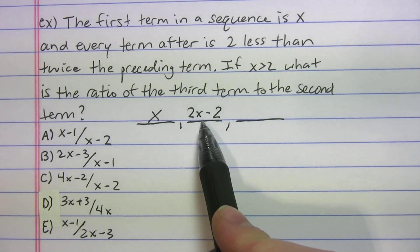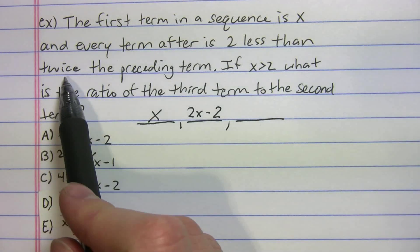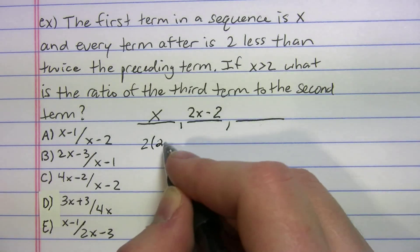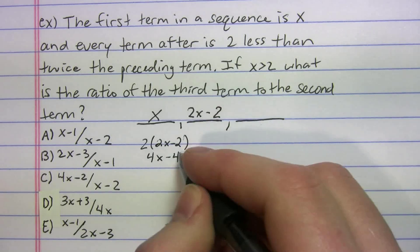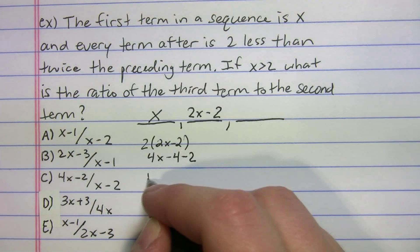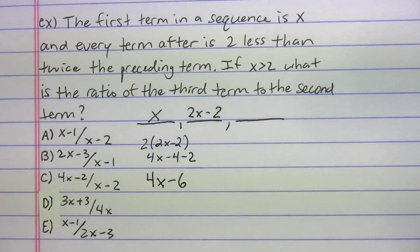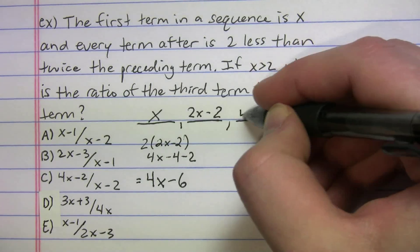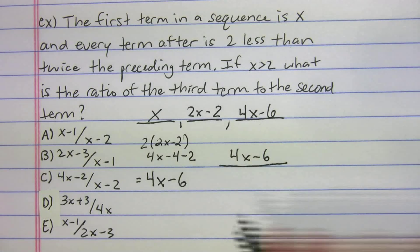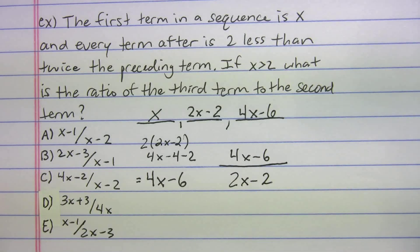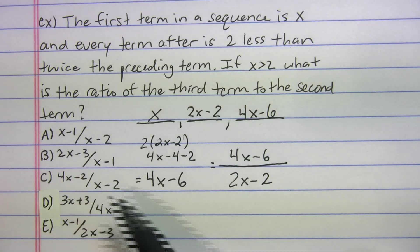So we found the second spot. If we want to find this spot, we got to go to the preceding one or the preceding term. It's twice, so two times 2X minus 2: 4X minus 4. And then two less than that, minus 2. So we get 4X minus 6. This spot should be 4X minus 6. Now when we do the ratio of the third term to the second, we set up a ratio - it's just one thing over another. So that's going to be 4X minus 6 over the second term, which is 2X minus 2.